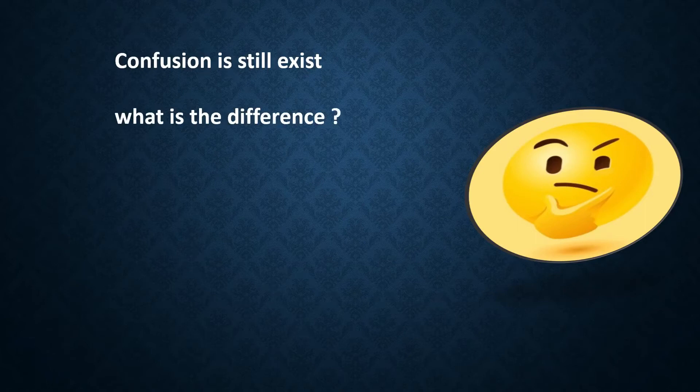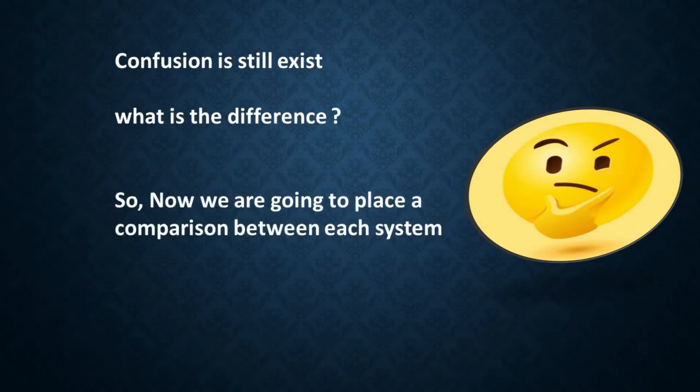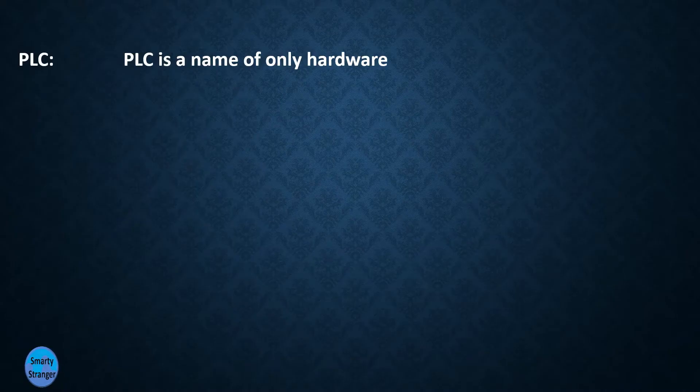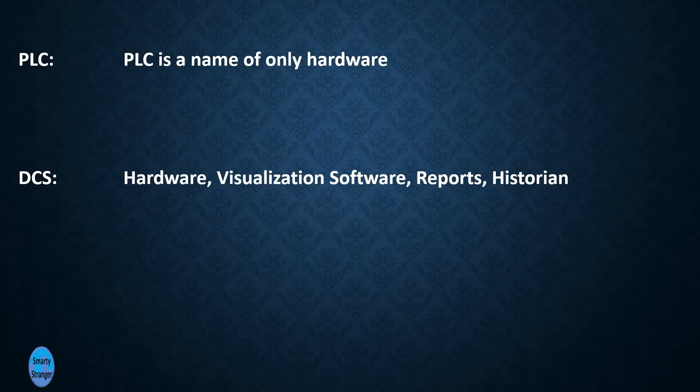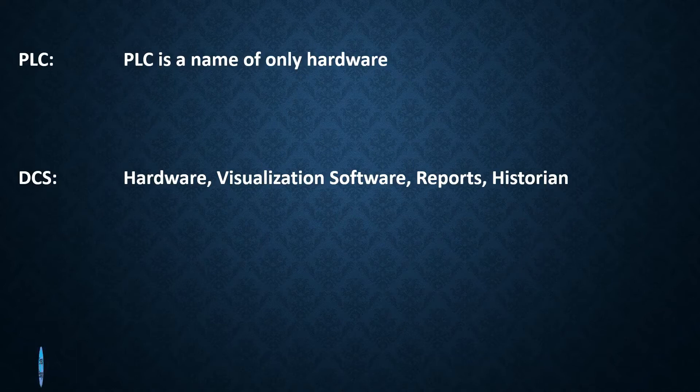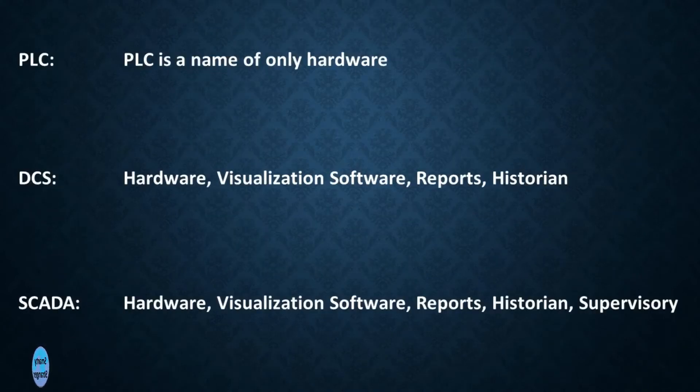PLC is a name of only hardware. DCS is a combination of hardware, visualization software, reports, and historian. SCADA consists of hardware, visualization software, reports, historian, and supervisory system.